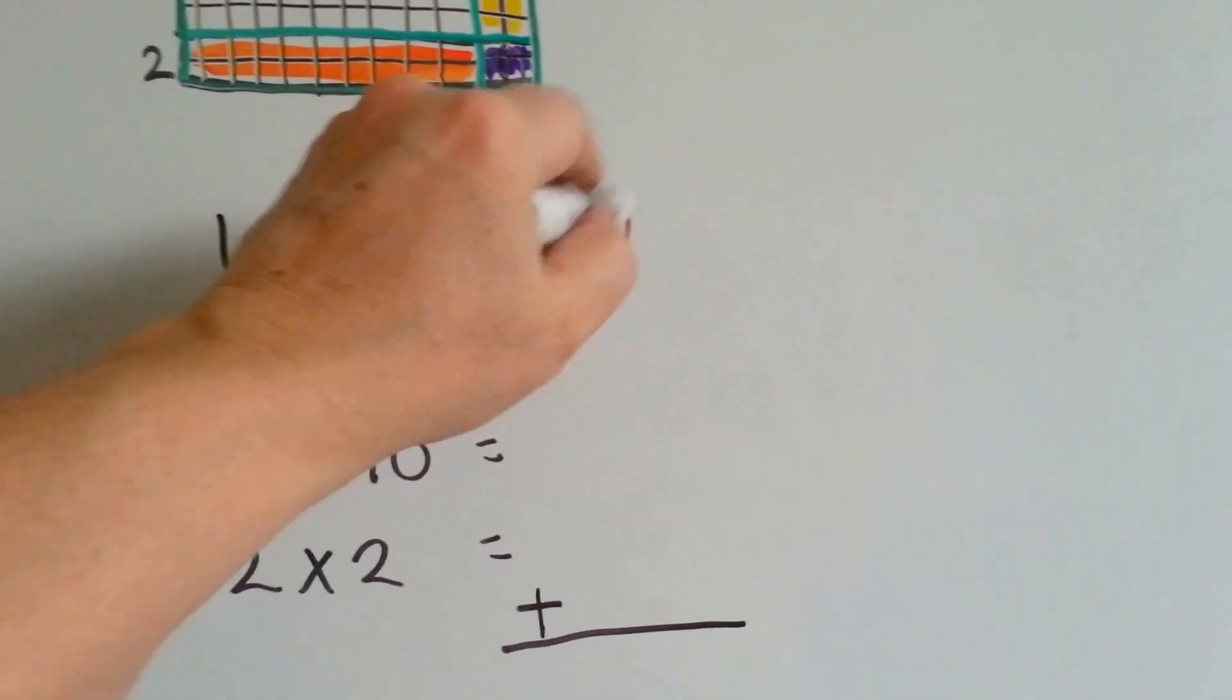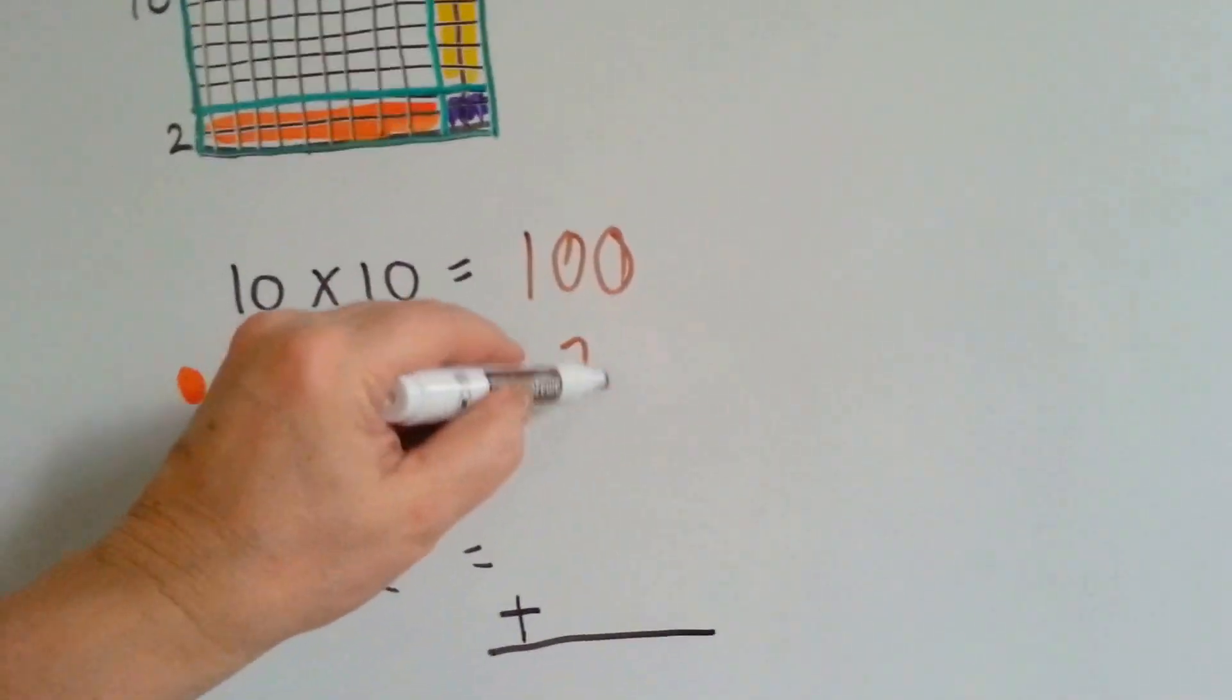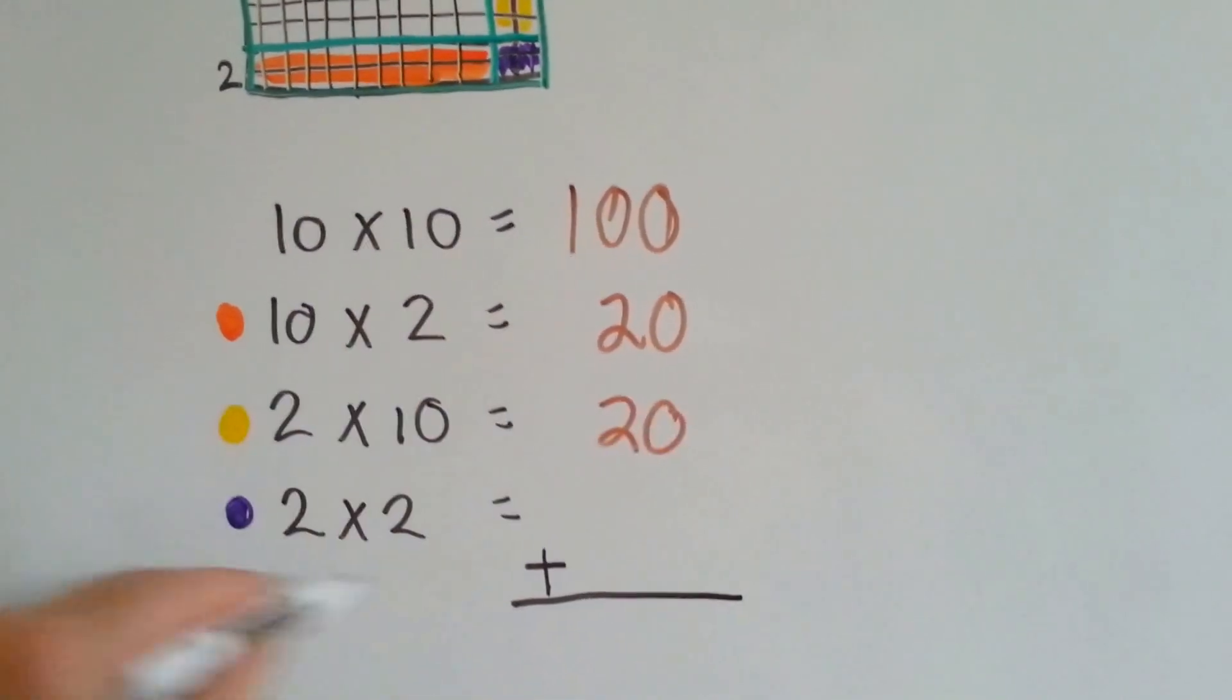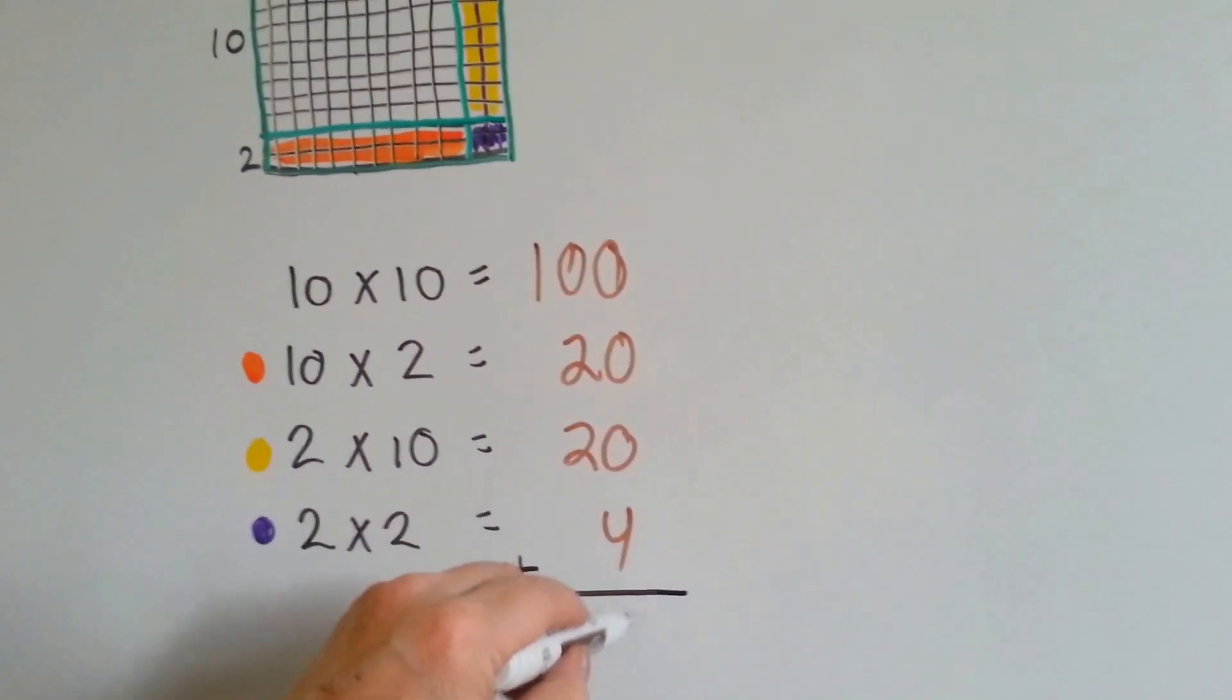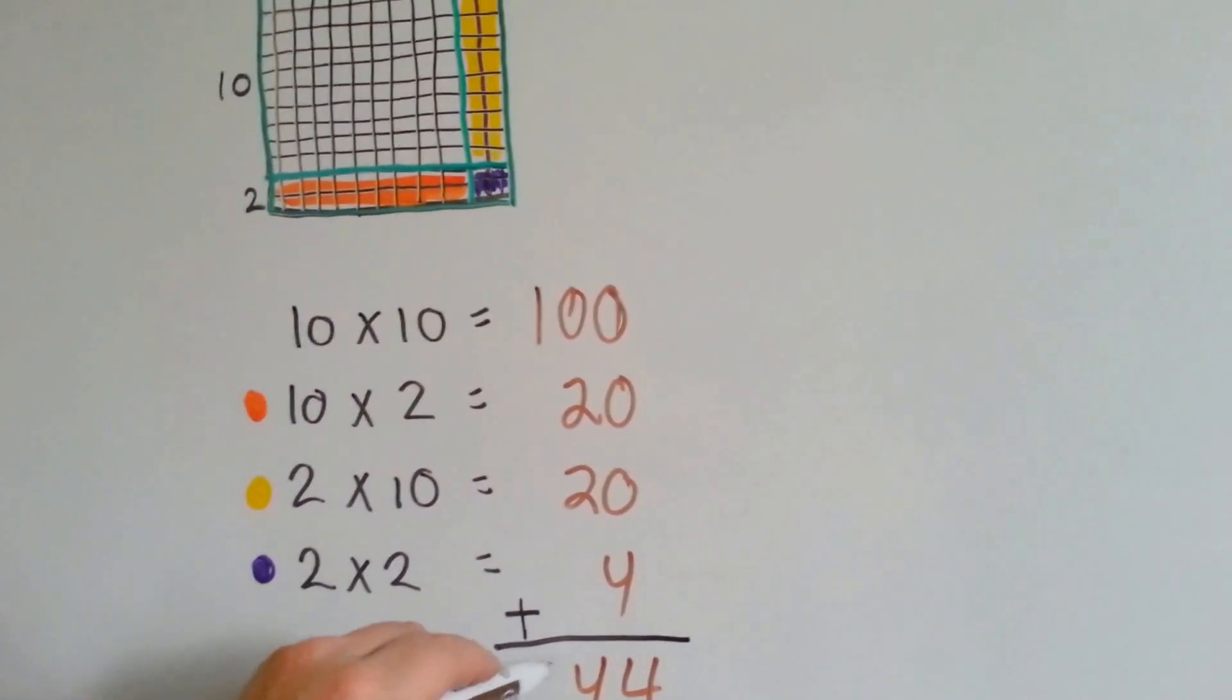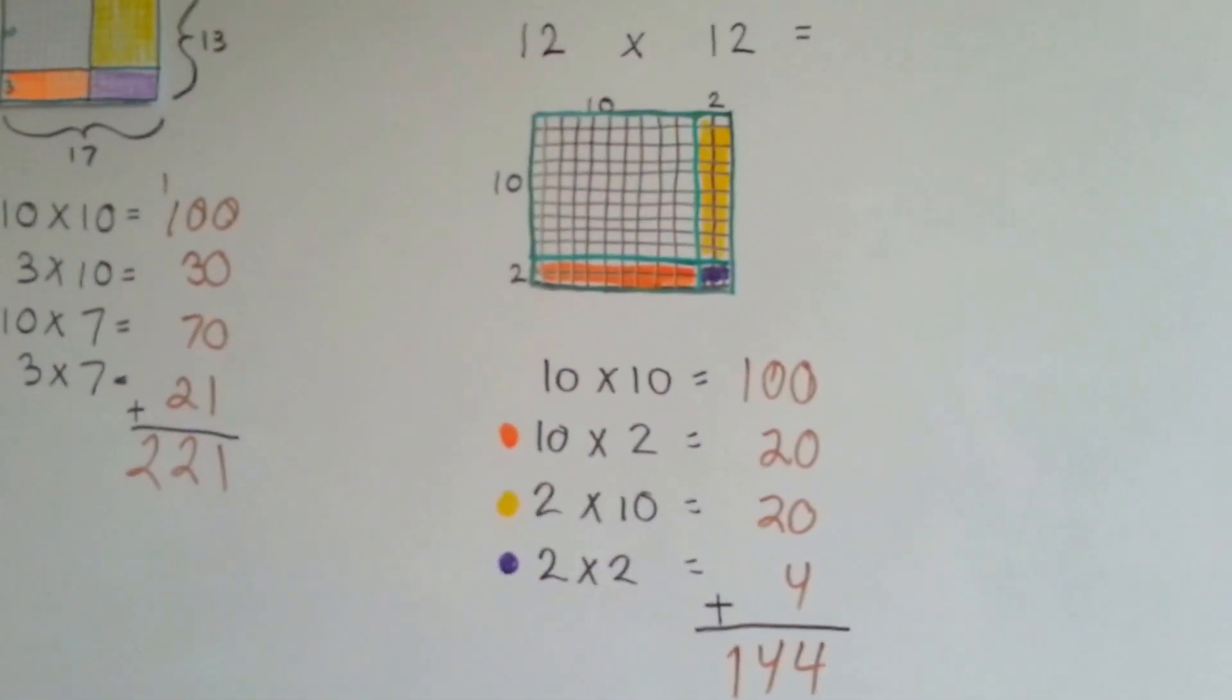And 10 times 10 is 100. 10 times 2 is 20. 2 times 10 is 20. And 2 times 2 is 4. And we add these all up and we get 0, 0, 0, 4. 2 and 2 is 4. And we bring the 1 down. And 12 times 12 is 144.